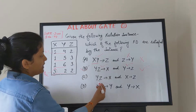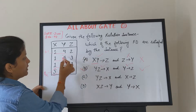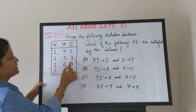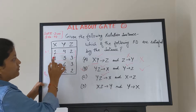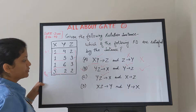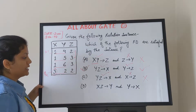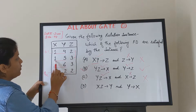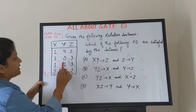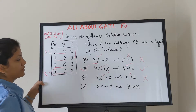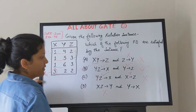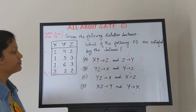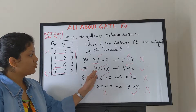We already verified YZ → X is true. Now option C: X → Z. X=1 appears three times with Z values 2, 3, and 3 — the value 1 maps to both 2 and 3, which is a violation. Option D: XZ → Y. The pair (1,3) appears with Y=5 and Y=6 — a violation. So options C and D are false. The answer is option B.